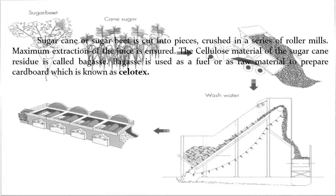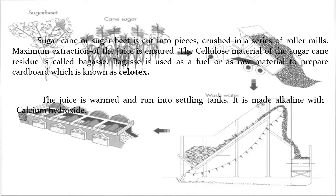Bagasse is also used as fuel or as raw material to prepare cardboard, which is known as cellotex. The juice is warmed and run into settling tanks.